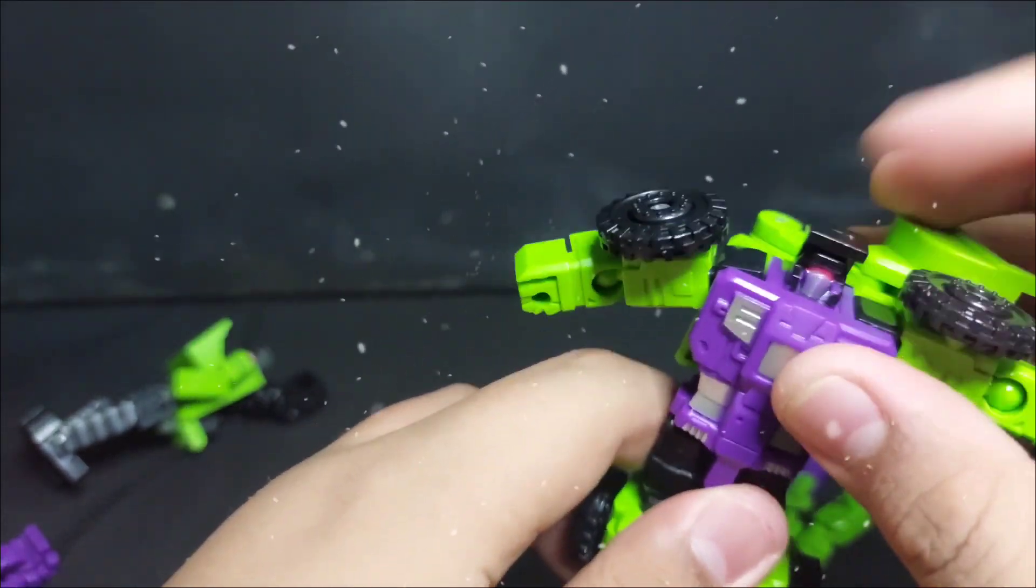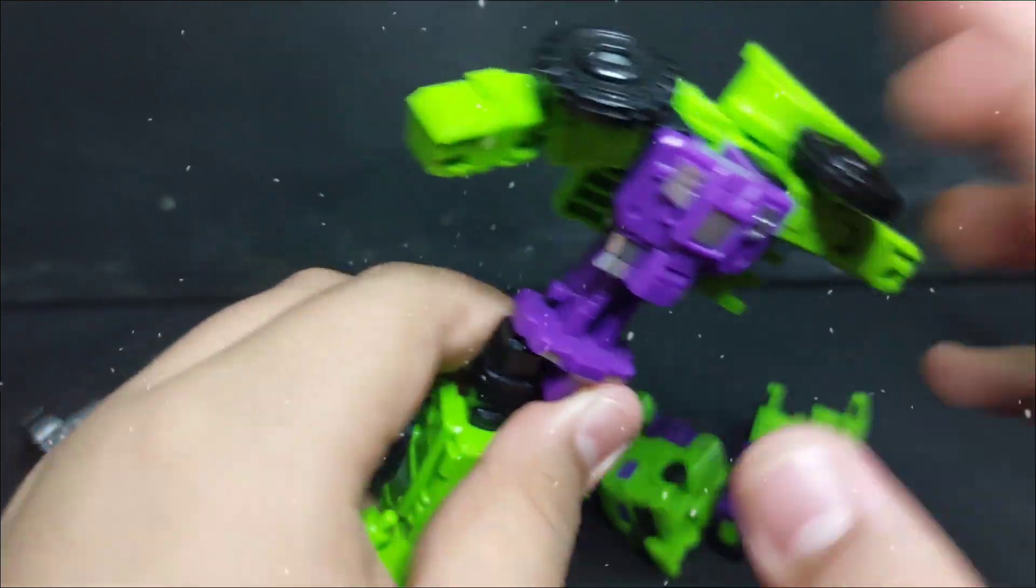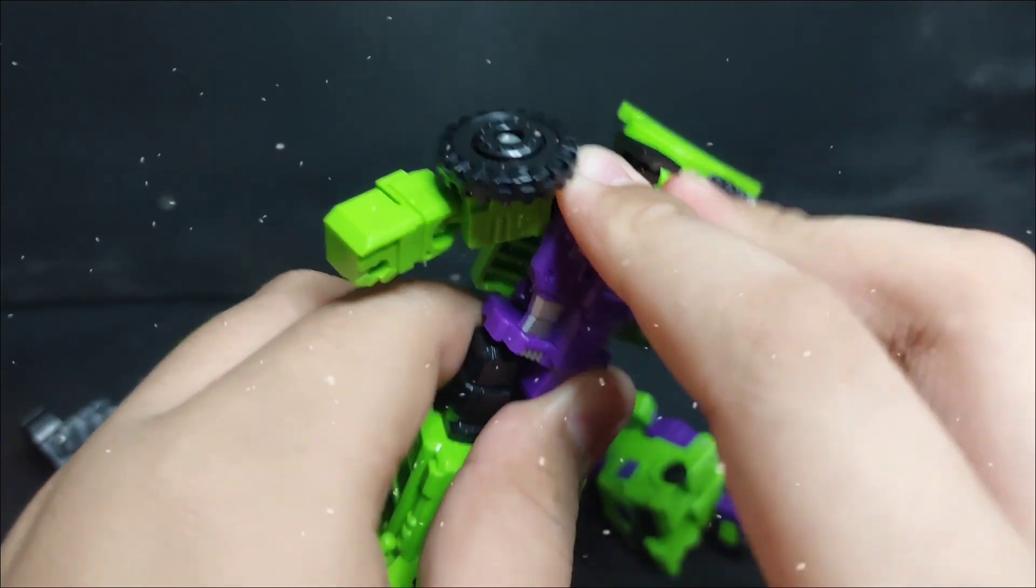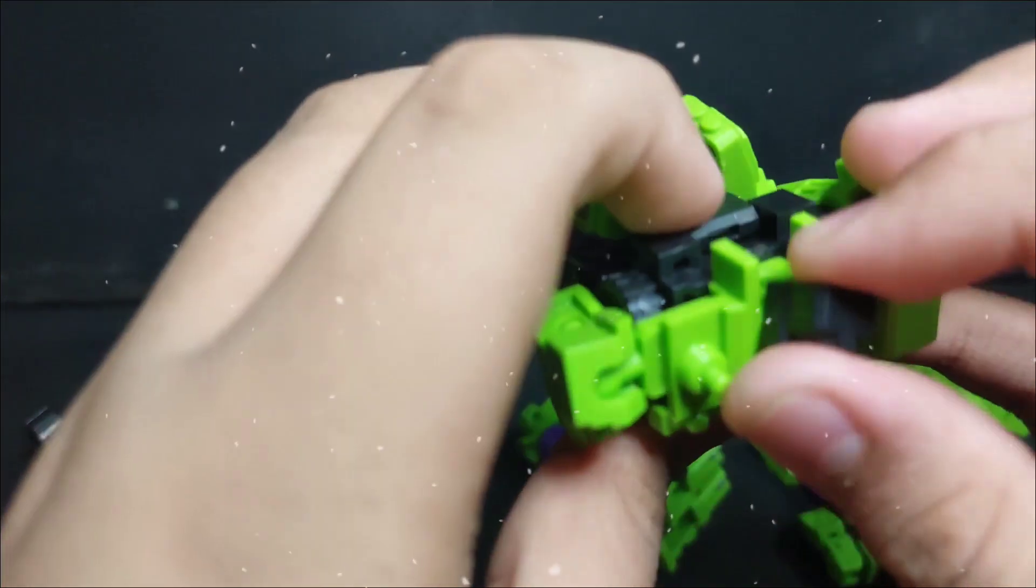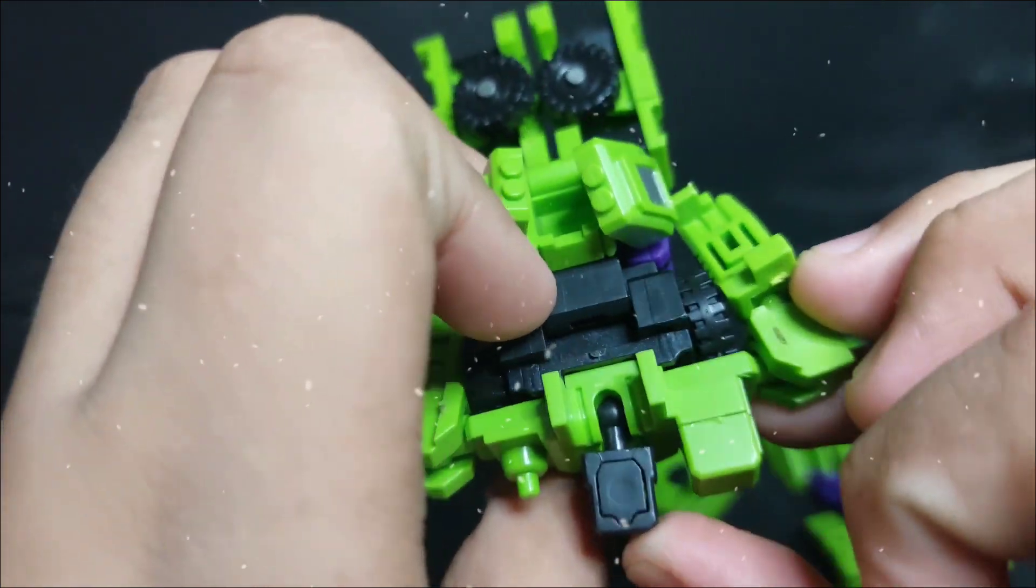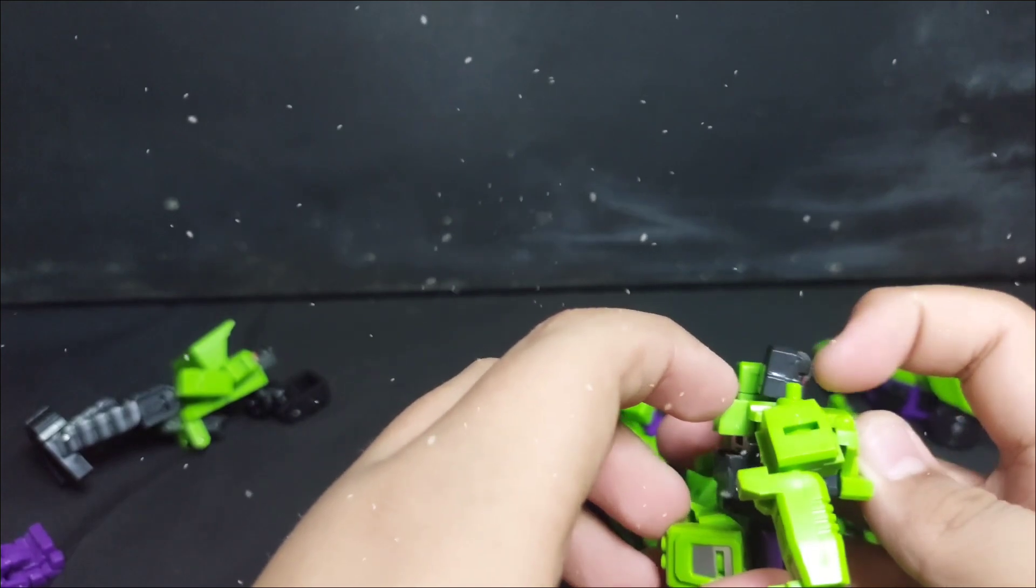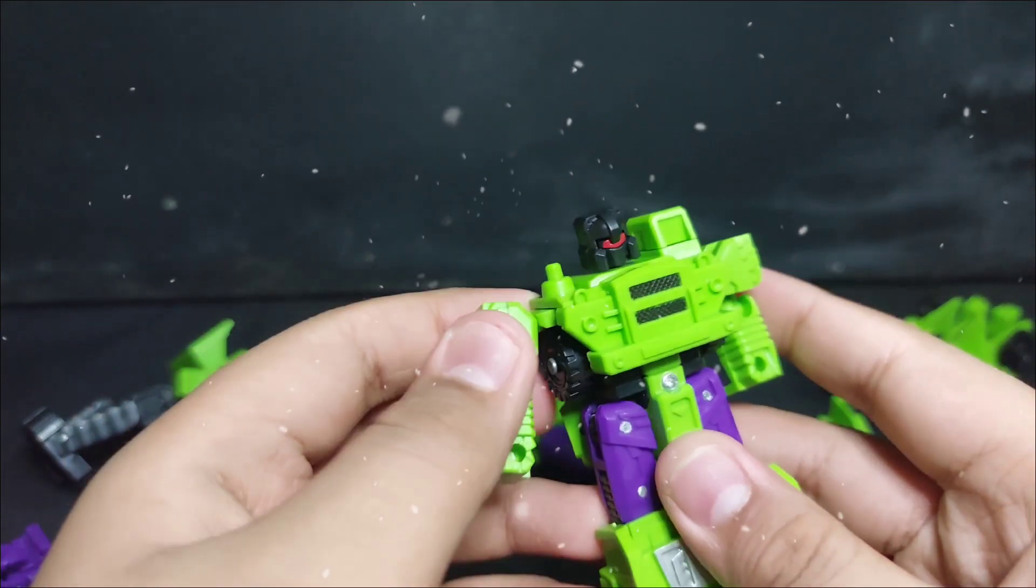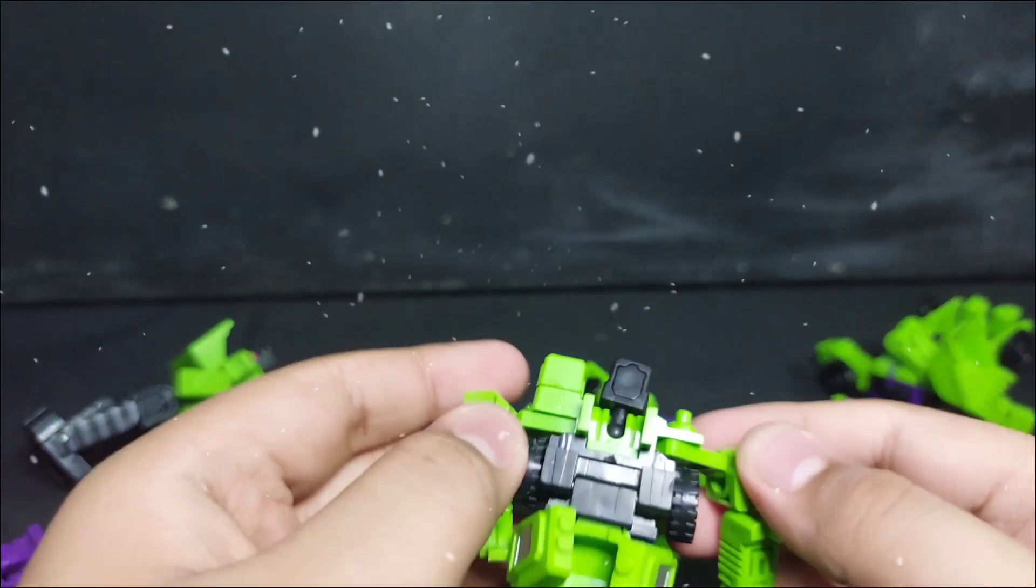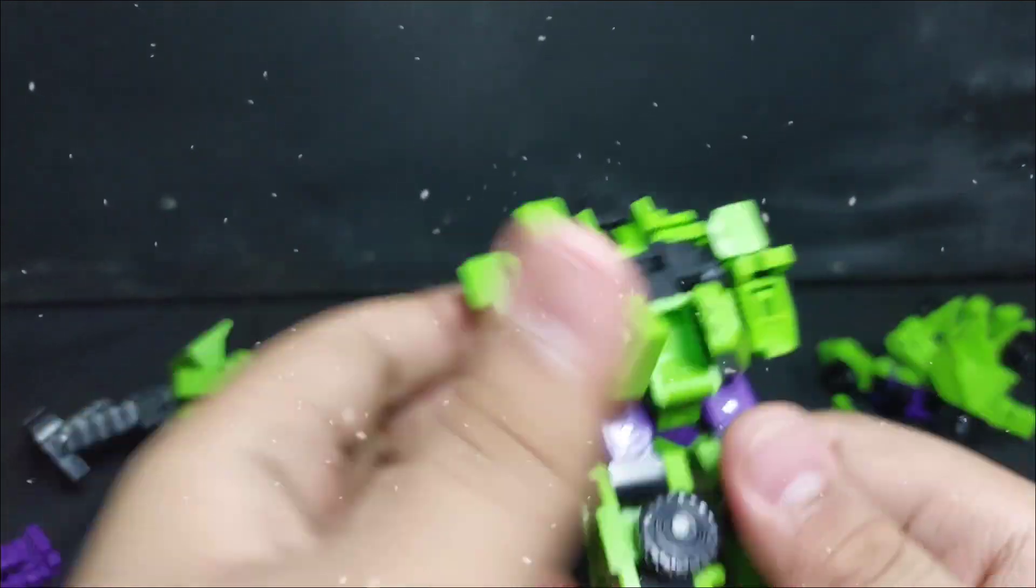Head. If you're wondering if Scrapper has head articulation, he doesn't because his head has to go in his body. Okay. Head can 360, head can move, ball joint right there. No, he can't look down, he can look down like 0.1%. Butterfly all the way back, but that's for transformation.